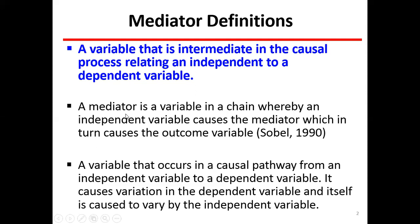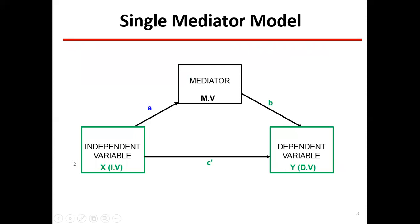So it's a chain whereby an independent variable causes a mediator, which in turn causes the outcome variable. The independent variable affects the mediator, and the mediator then affects the dependent variable. So it occurs in a causal path — the path by which one variable affects another — and in that process of change, another variable appears in the middle, which we call the mediating variable.